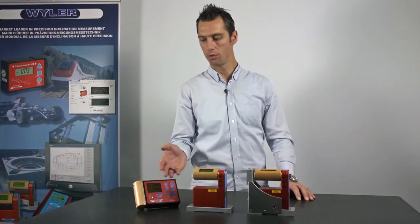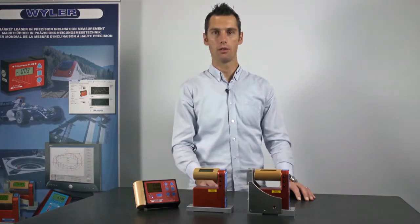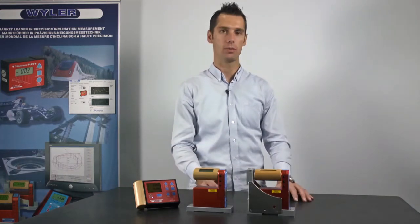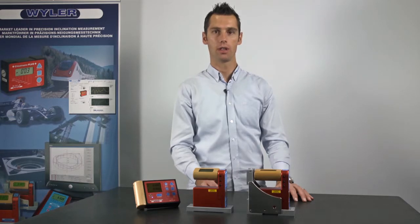With two Blue Levels and a Blue Meter Sigma, I can align an object, in our case the setting plate, even faster and more efficiently.